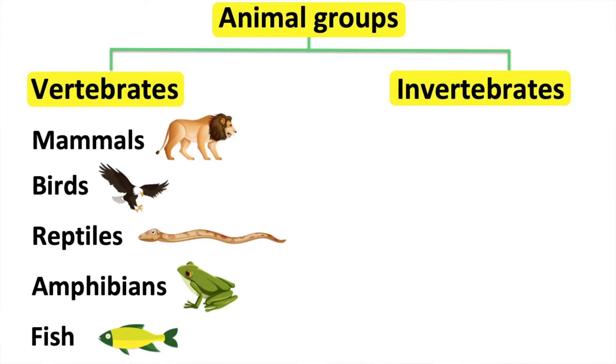Fish have scales and they use their gills to breathe. Fish lay soft eggs in water and their temperature changes. Therefore, they are cold-blooded animals.